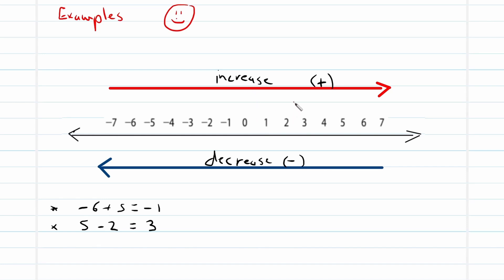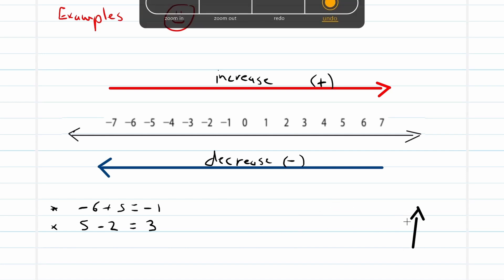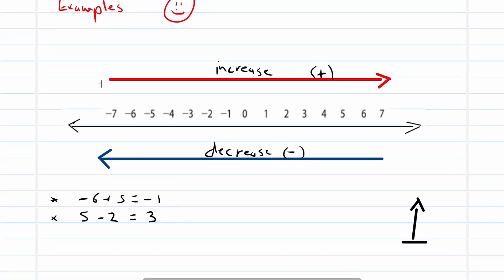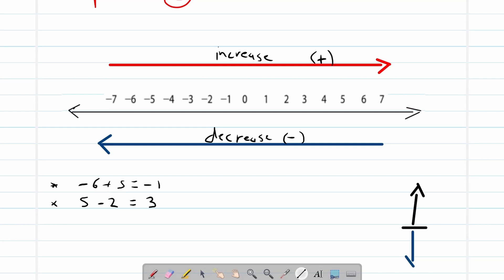Let's think about elevation. I live close to the ocean, so sea level is zero. If you live above sea level — currently I'm about 50 meters above sea level — that's a directed number from zero giving a direction and a magnitude. Mount Everest is almost 9000 meters above sea level. Below sea level, the Mariana Trench is approximately 3000 to 4000 meters down, and the Dead Sea is 420 meters below sea level. So we have zero and then a directed number either up or down.